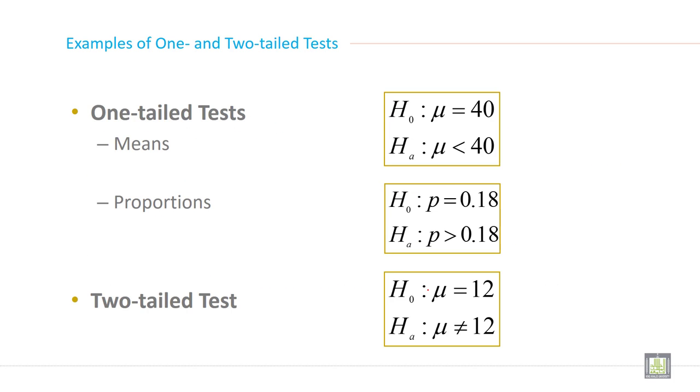Examples of one-tailed and two-tailed tests. It depends on the sign of the alternative hypothesis. If you have a sign less than or greater than, it is an example of a one-tailed test. If your alternative hypothesis has a sign less than or greater than, you can say it is a one-tailed test.